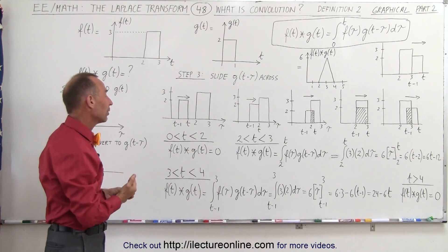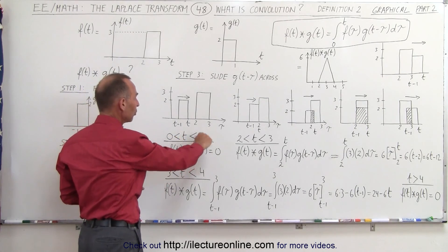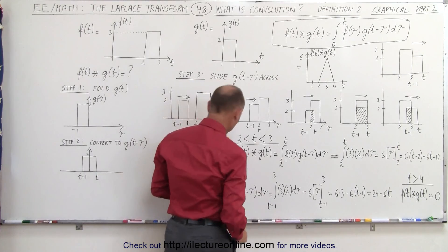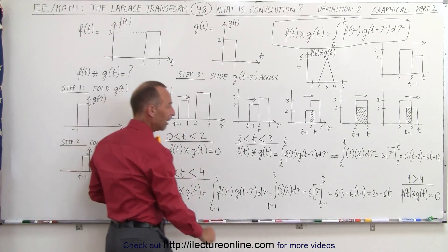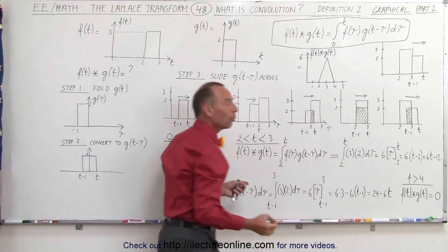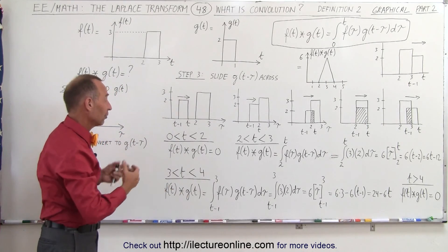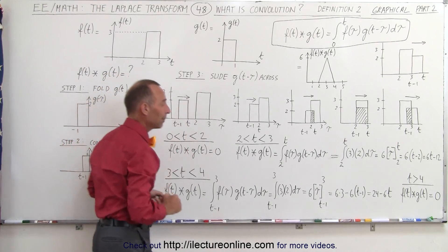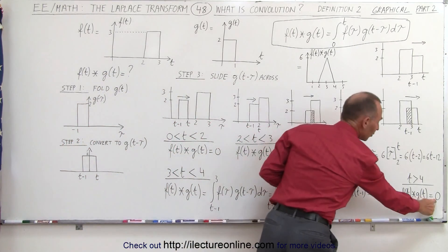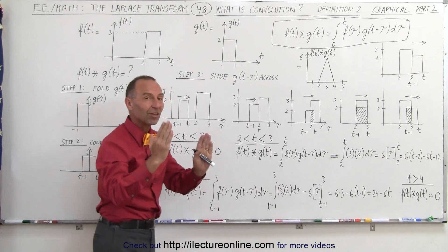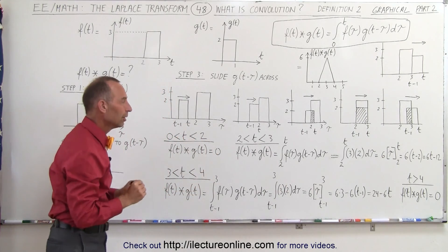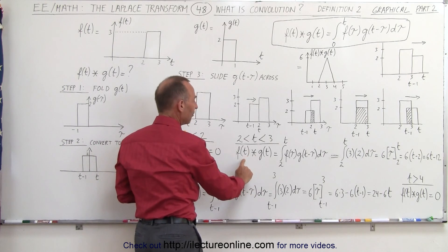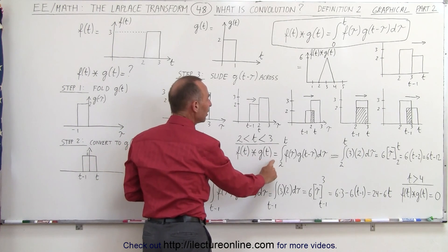So what we're going to do here is again work through the four regions: t between zero and two, t between two and three, t between three and four, and t greater than four. It's easy for the first and last regions — we know the convolution is equal to zero because there's no overlap. But for the other two regions, as they're sliding over one another, f convolved with g is equal to the integral with appropriate limits.